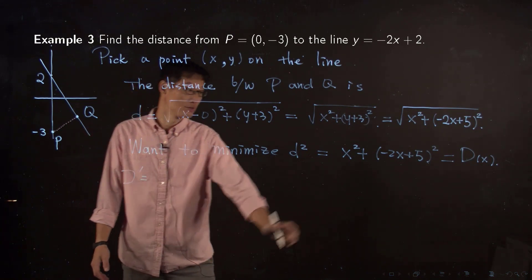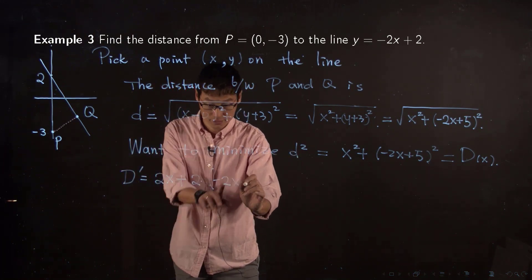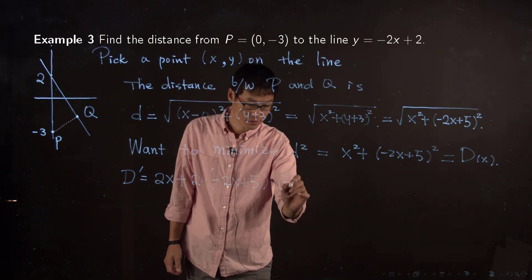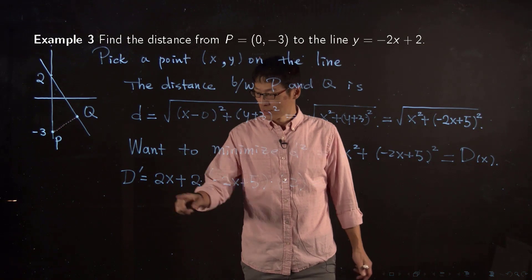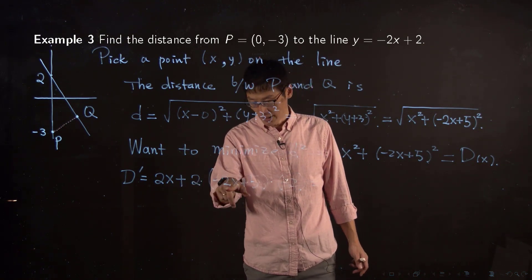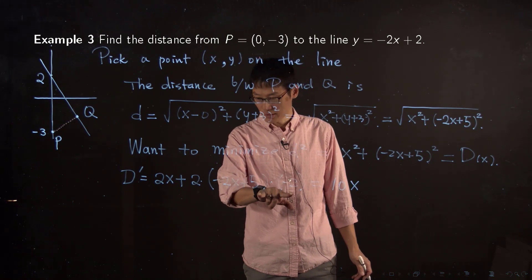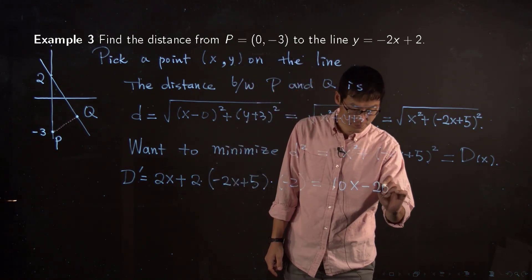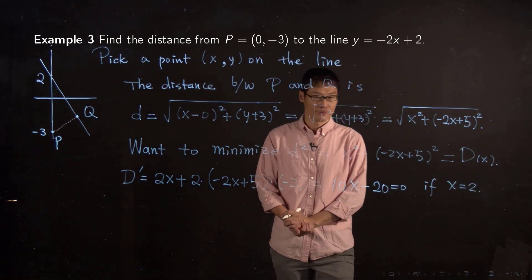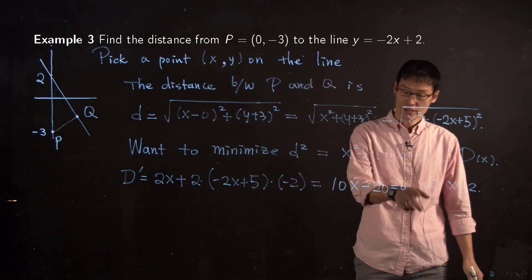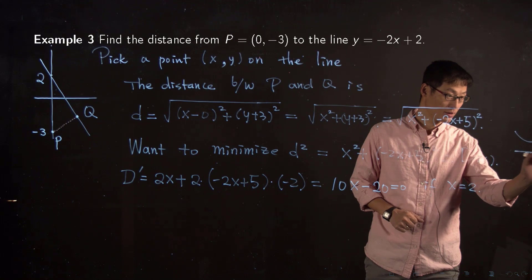D prime is the derivative of x² plus the derivative of (-2x + 5)². This gives 2x + 2(-2x + 5)·(-2), which simplifies to 2x + (-2)·2·(-2x + 5). Combining terms: 2x + 8x - 20, giving 10x - 20. Setting this equal to zero gives x = 2.